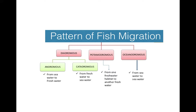There are basically three patterns of fish migration: diadromus, potamodromus, and oceanodromus migration. Diadromus is again subdivided into two types: anadromus migration and catadromus migration. Diadromus migration is the migration of fish between sea and freshwater, which is why it is subdivided into anadromus and catadromus.